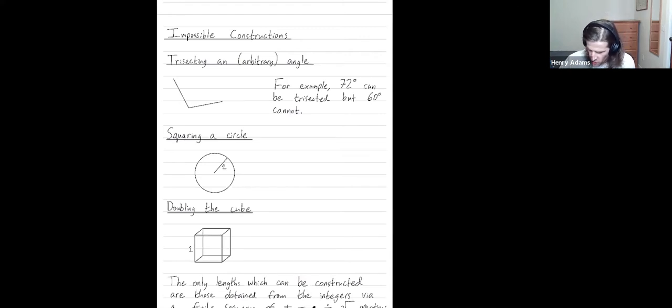So one of them is squaring a circle. Let me describe this. I give you a circle, say with radius one. So what's the area of the circle? The area is pi.